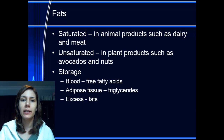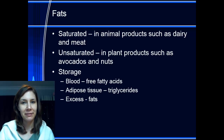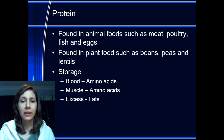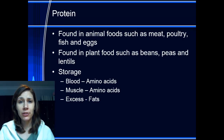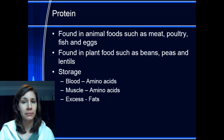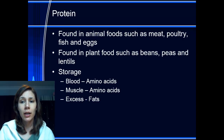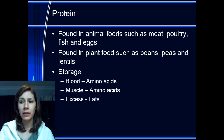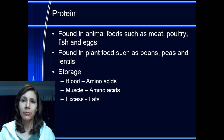Fats are stored in the blood as free fatty acids, and stored in adipose tissue — basically fat tissue — as triglycerides. Excess fats are obviously stored as fat. Protein is found in animal foods such as meat, poultry, fish, and eggs, but also in plant foods like beans, pasta, and lentils. Proteins are stored in the blood and muscle as amino acids, but too much protein is also stored as fat. Basically, any energy source consumed in excess is stored as fat, because that is the storage capacity your body defaults to.